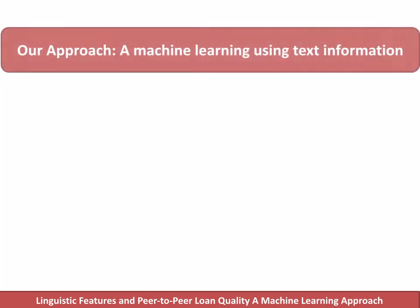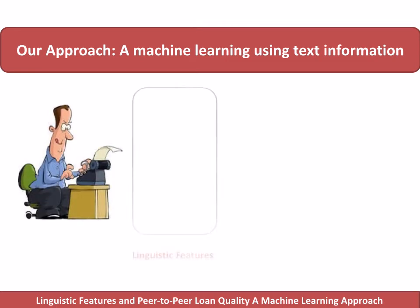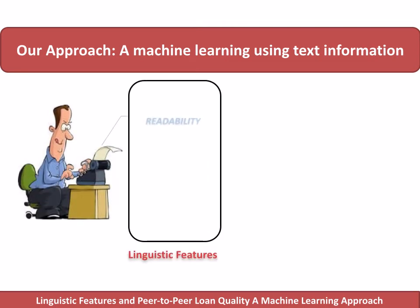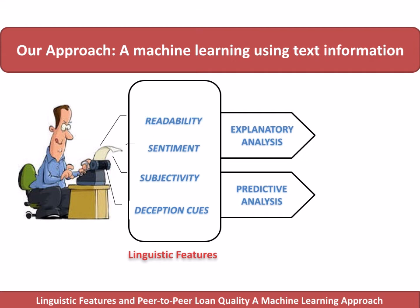We first implemented a scalable machine learning approach to extract four-dimensional linguistic features from text provided by borrowers in debt-based crowdfunding contexts, including readability, sentiment, subjectivity, and deception cues. Then, we conducted both explanatory and predictive analysis to assess the quality of borrowers and their loans.